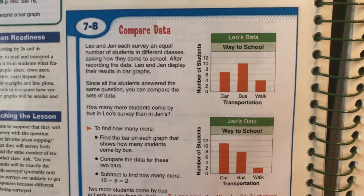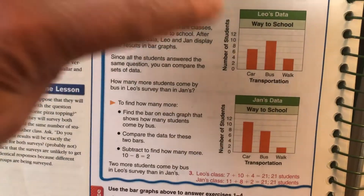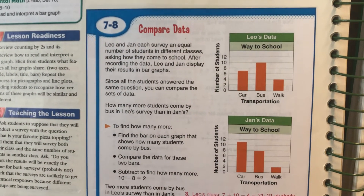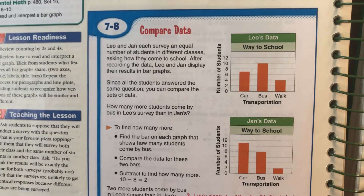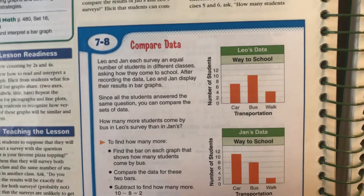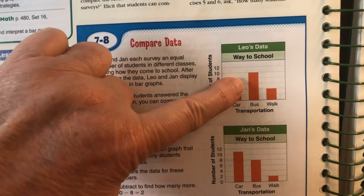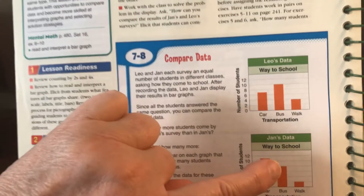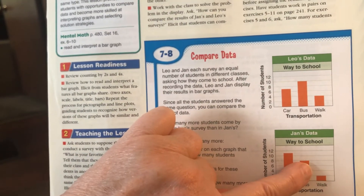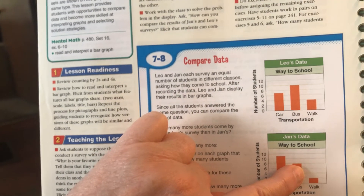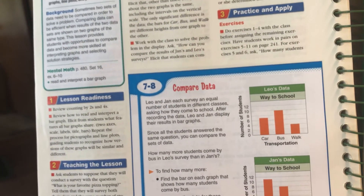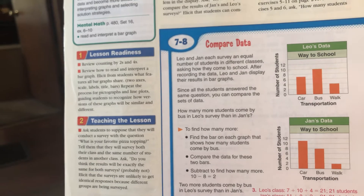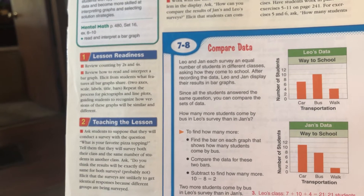The first thing you do is look at the bars in Leo's graph compared to the bars in Jan's graph. Find the bar on each graph that shows how many students came by bus. You can see Leo's graph for buses goes up to the line 10. When you go down to Jan's, her bus line stops at 8. So you take 10 and subtract 8, and it tells you the difference — how many more kids went by bus in Leo's group, which was 2.